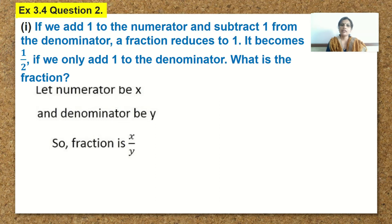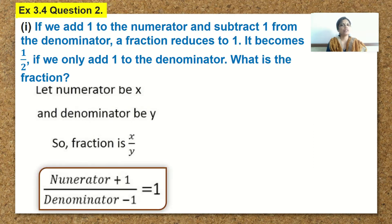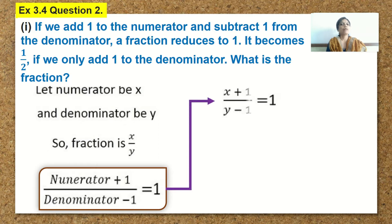Now, if you read the sum carefully, our first condition is: if we add 1 to the numerator and subtract 1 from the denominator. Accordingly, we will write numerator plus 1 upon denominator minus 1 and the fraction reduces to 1. Since we have taken numerator as x and denominator as y, it will be x plus 1 upon y minus 1 is equal to 1.